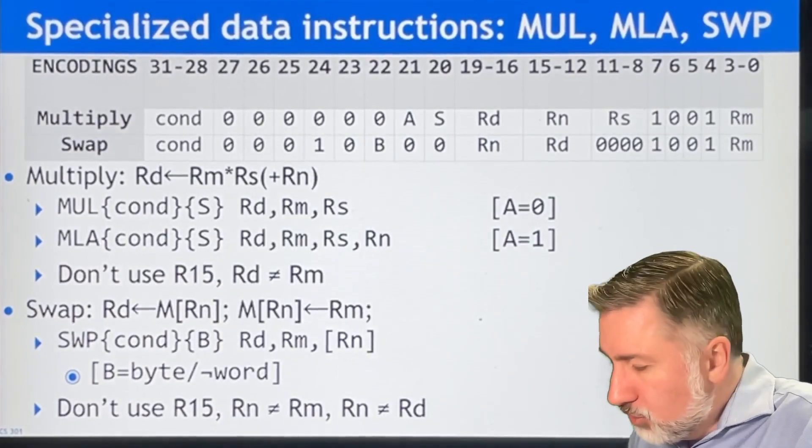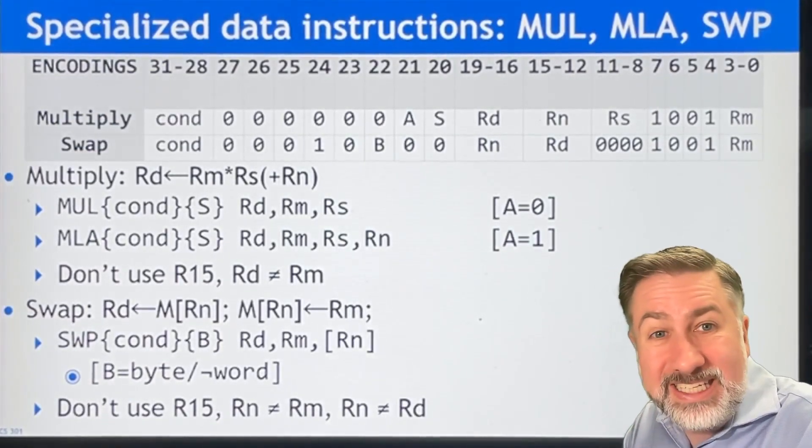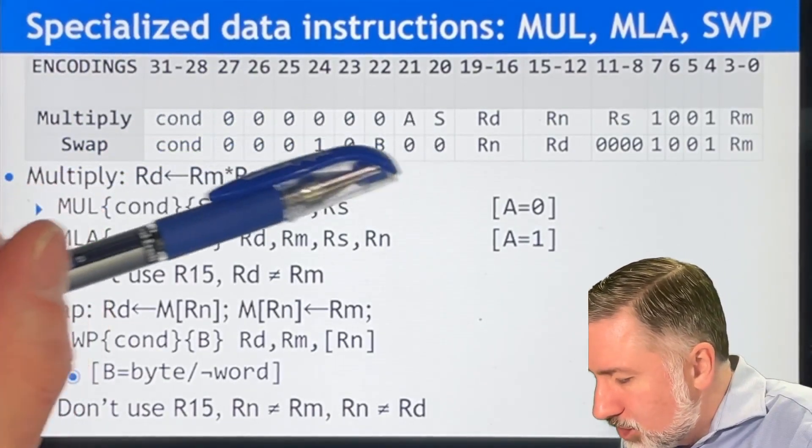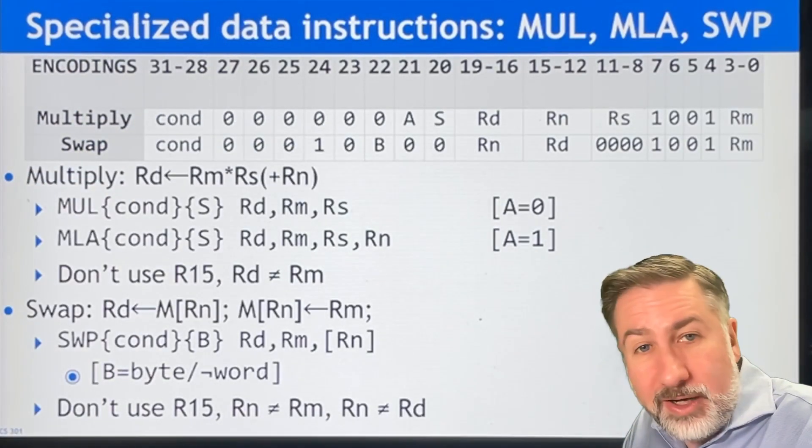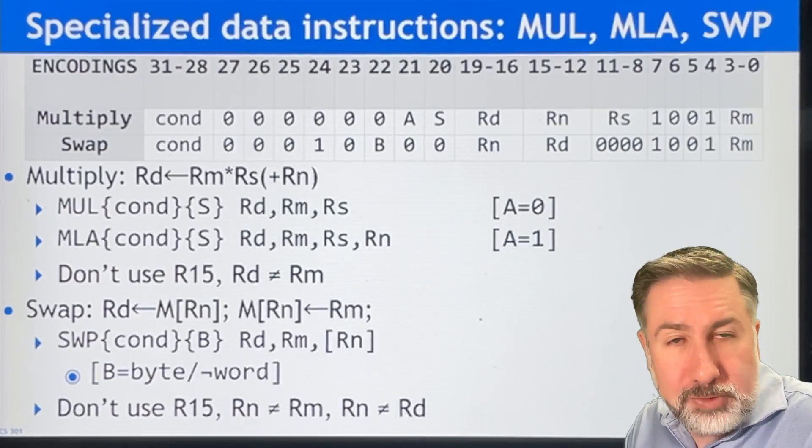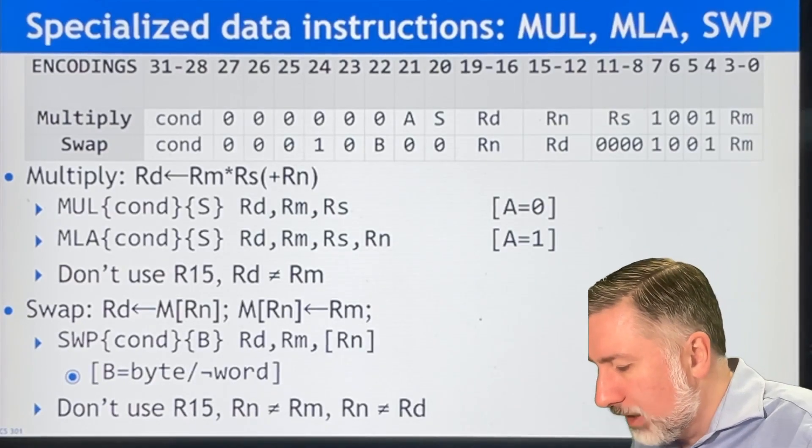They're still data instructions, you still have bits 27 and 26 being zero, but you have special conditions across here which specify multiplication, multiply-add, and swap. So these are special instructions that we're going to look at.